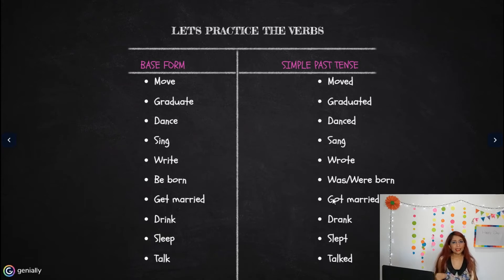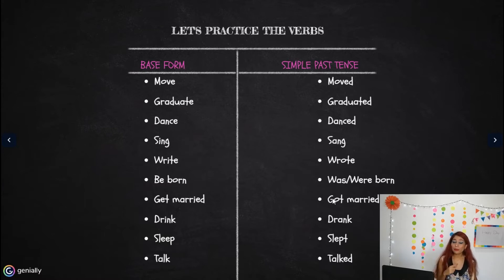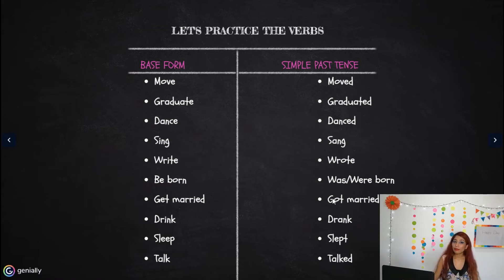We're seeing some verbs that are regular and some that are irregular. These are additional verbs beyond the ones shown in last week's chart. You may want to copy them down because it will help you study. Please pay attention and study these verbs in their simple past form — you need to learn this.